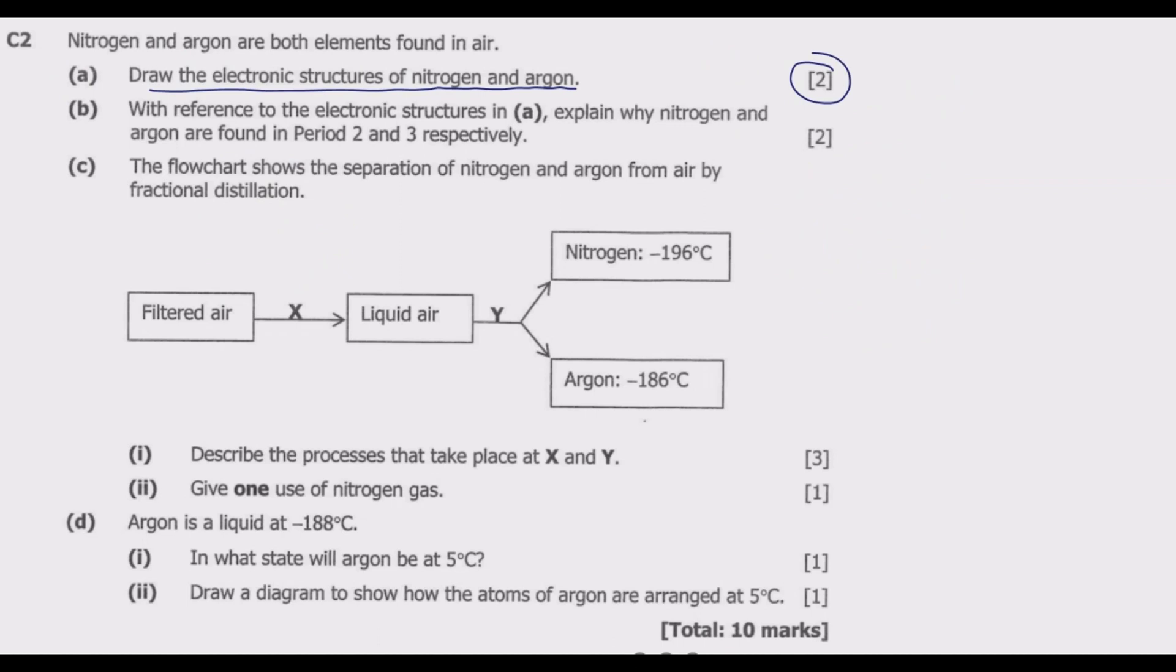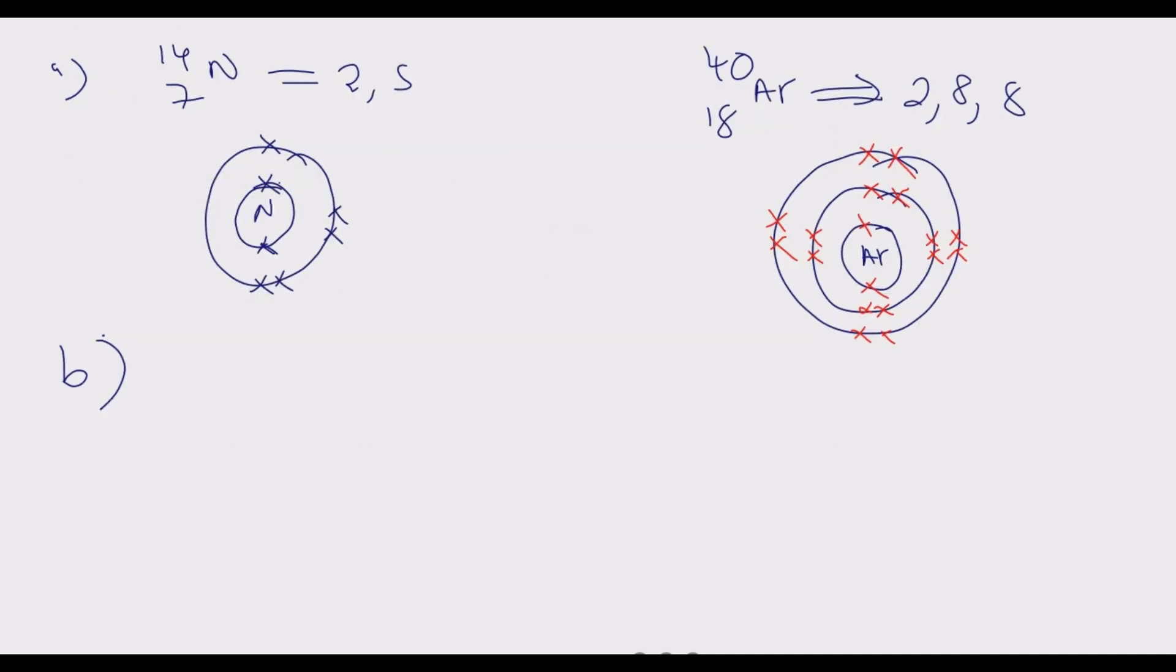Question B: with reference to the electronic structures in A, explain why nitrogen and argon are found in period 2 and period 3 respectively. So we need to explain that with reference to the structure we've done in question A. Before I answer the question, there are two key things you need to know. The first thing is what determines the group in which a given element belongs.